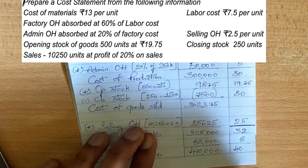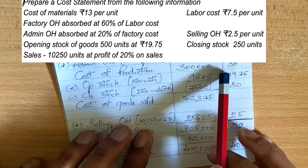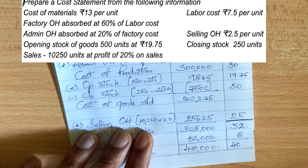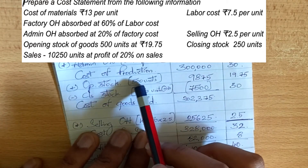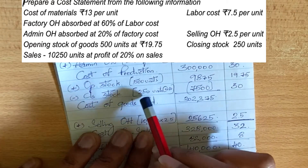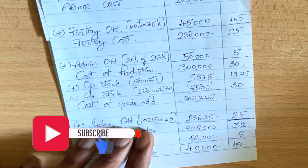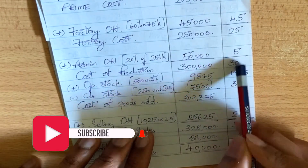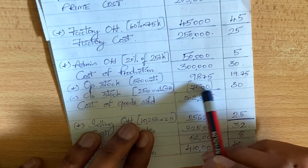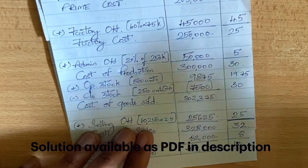Now we need the cost of goods sold. We take what we have produced and add the opening stock — because when we sell, we also sell from the opening stock of 500 units at 19.75. Then we subtract the closing stock of 250 units. The closing stock per unit is 30, so 250 into 30 is 7,500. So 3 lakh plus that amount minus 7,500 gives us the cost of goods sold.